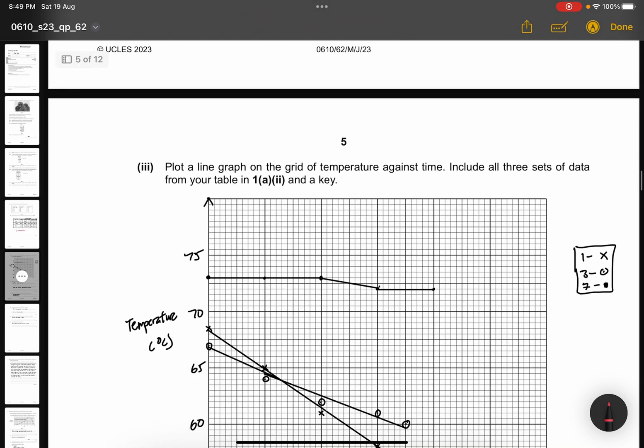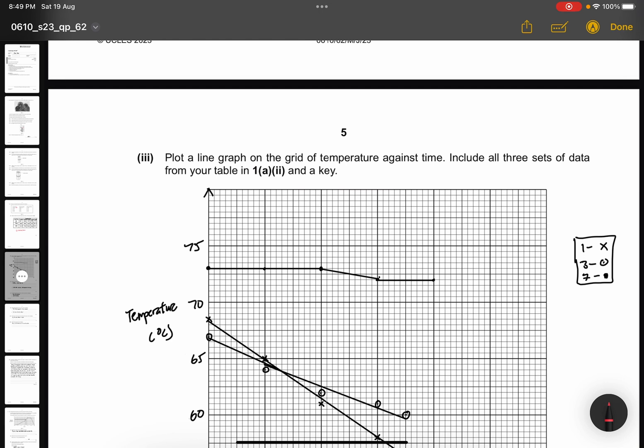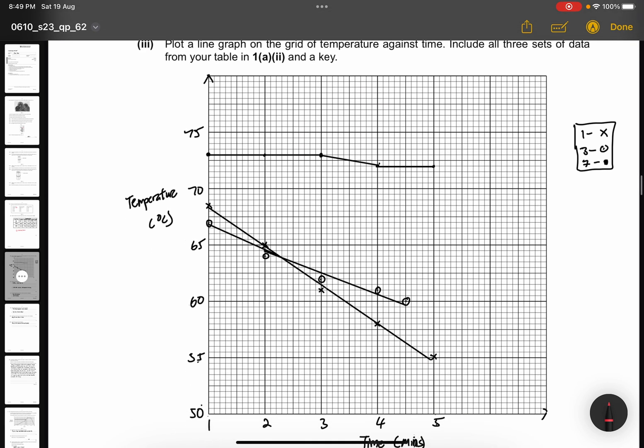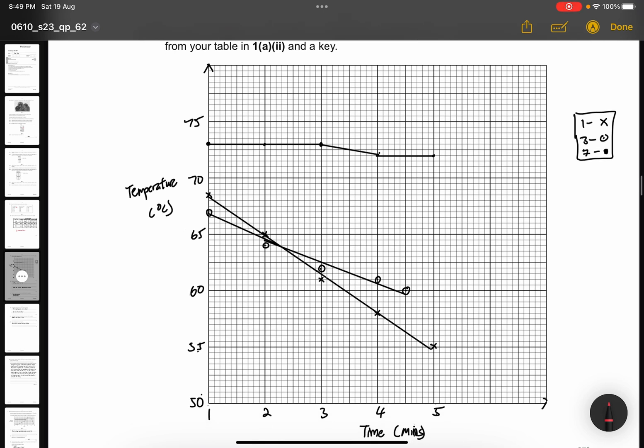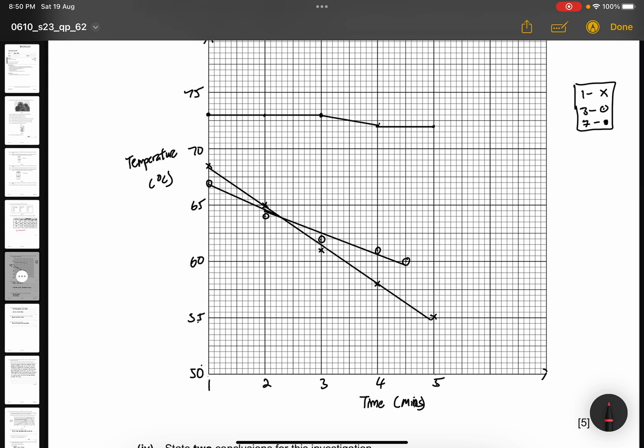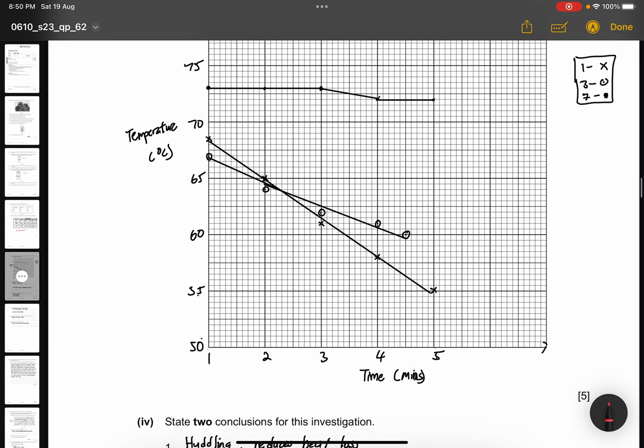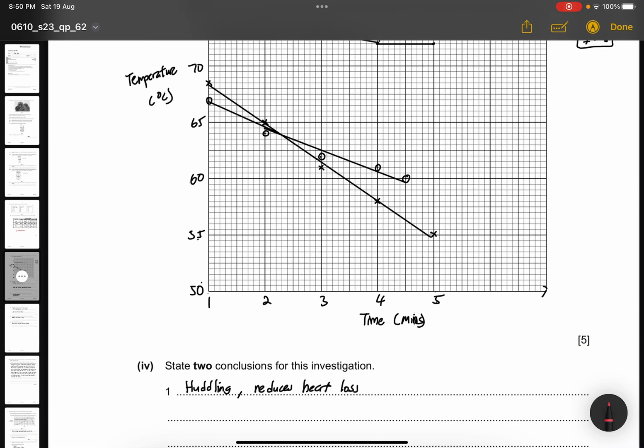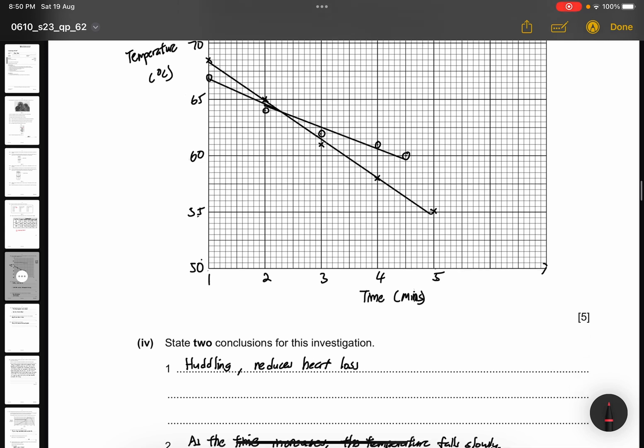Question part 3. Plot a line graph on a grid of temperature against time. Include all 3 sets of data from your table 1A part 2 and a key. A key is just something like this to show which dot is which test tube. The lines are not that accurate, but I try to make it look as nice. This is how it's going to look like - there will be 3 lines in total and you must label the units and a suitable scale and that's how you get your 5 marks.